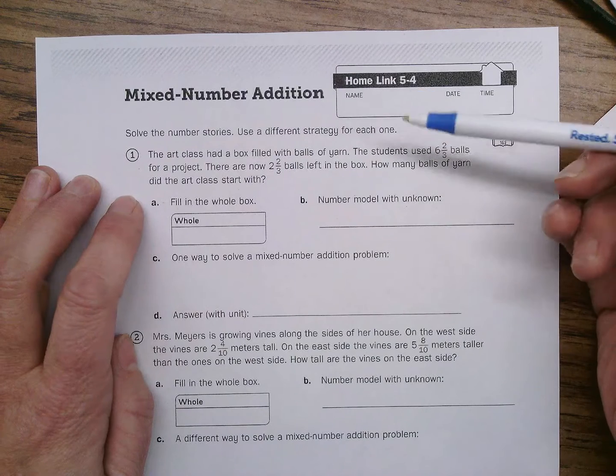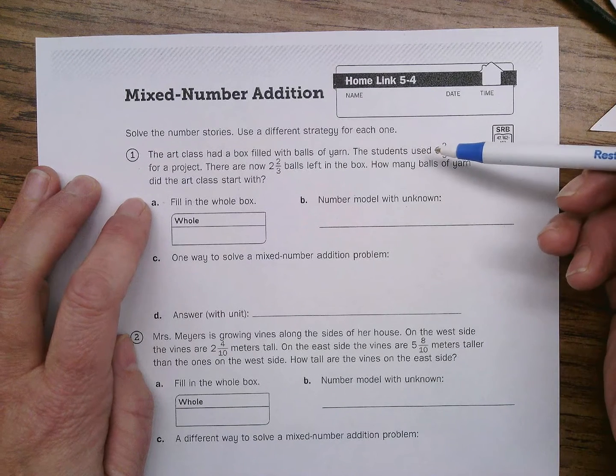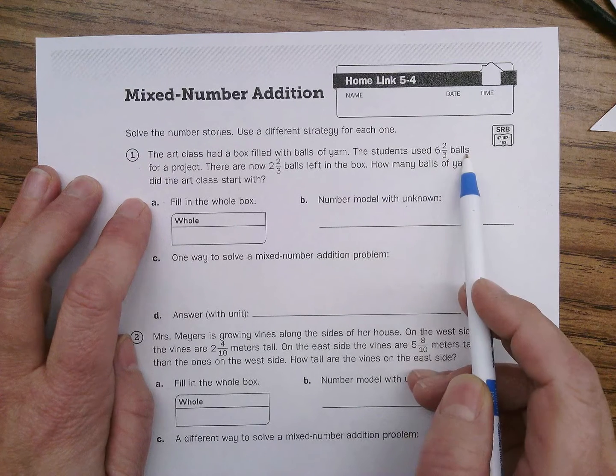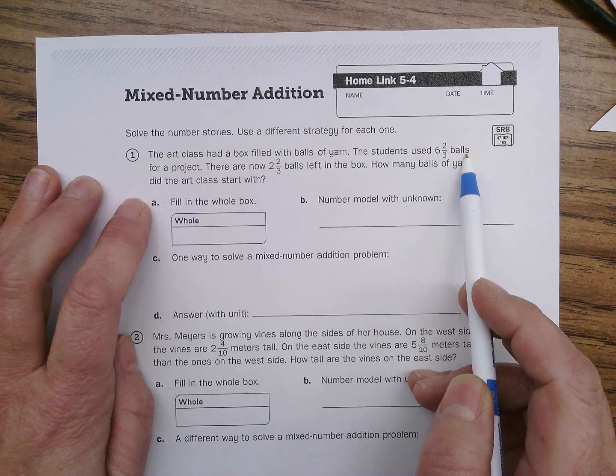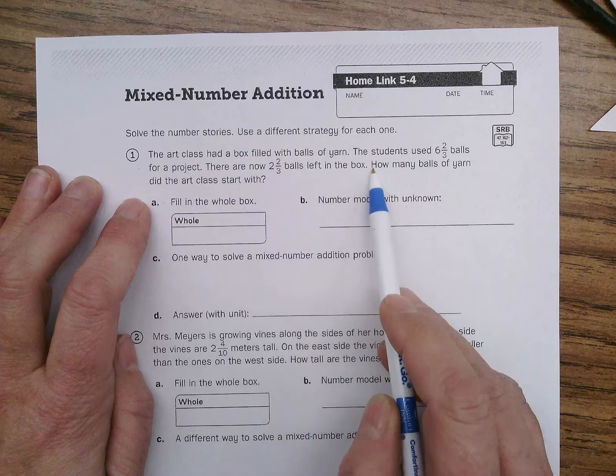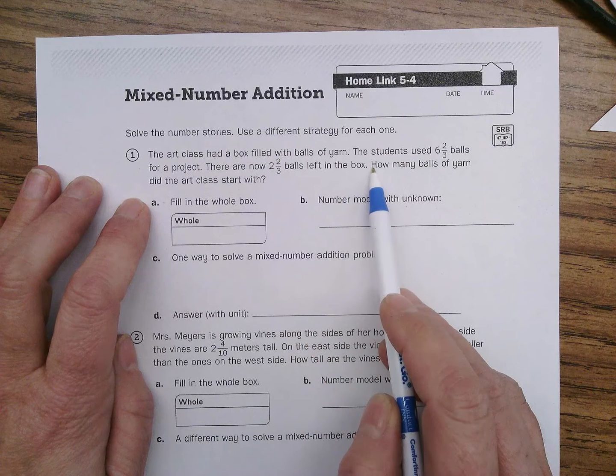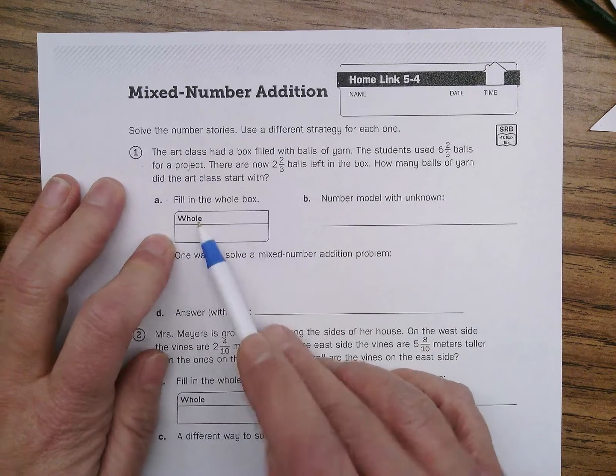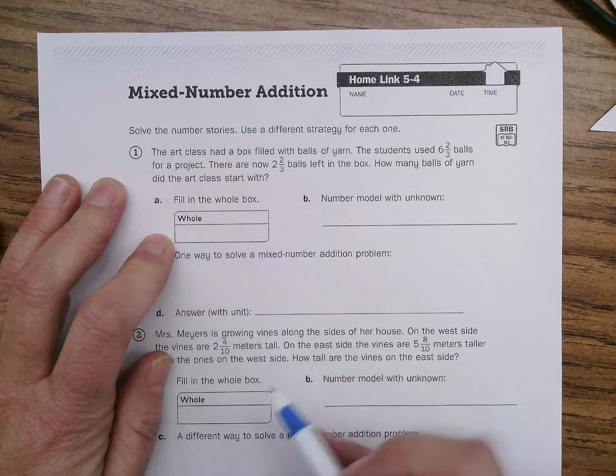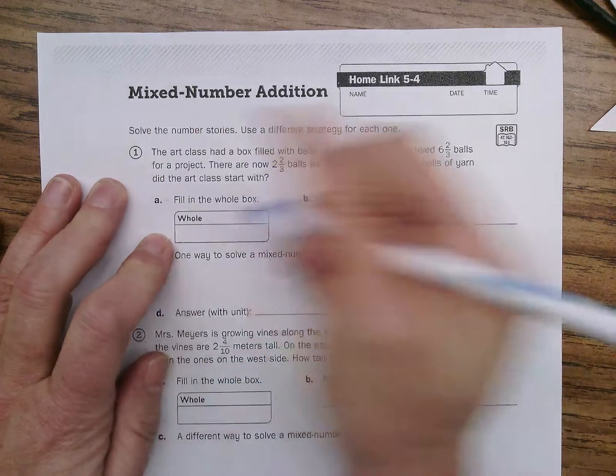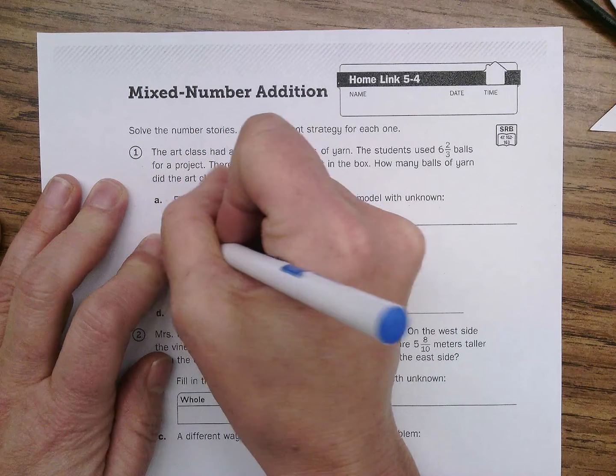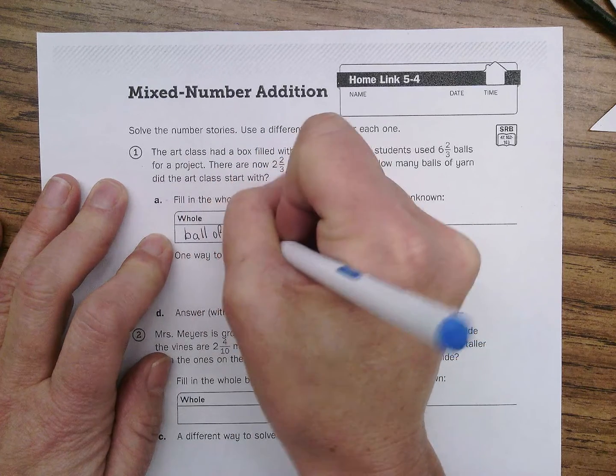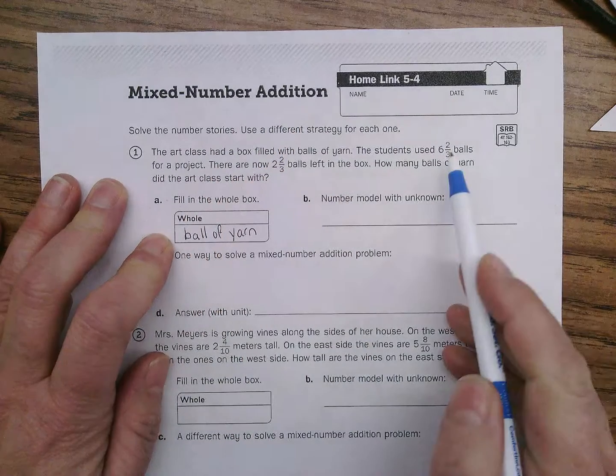Let's see. Well, they used six and two-thirds balls for the project. And they now have two and two-thirds balls left. So, let's fill in the whole box. So, what do you think the whole is? The whole is ball of yarn. That's the whole, because that's what we're counting, right?